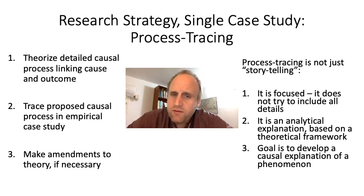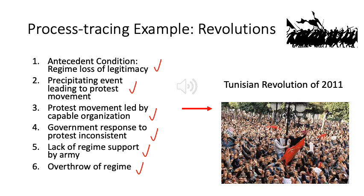Let's look at an example for process tracing: revolutions. We could build a theory of a causal process for revolutions based on well-known revolutions like the Russian Revolution of 1917 or the Iranian Revolution of 1979. To begin with, we would expect a loss of legitimacy by the regime — that's an antecedent condition. In the 1970s, the Iranian Shah isolated himself, was known to be corrupt and only benefiting a small circle, and had lost his connection with the country. Similarly, before 1917, the Russian czar seemed divorced from the reality of what was happening in his country — a loss of legitimacy.